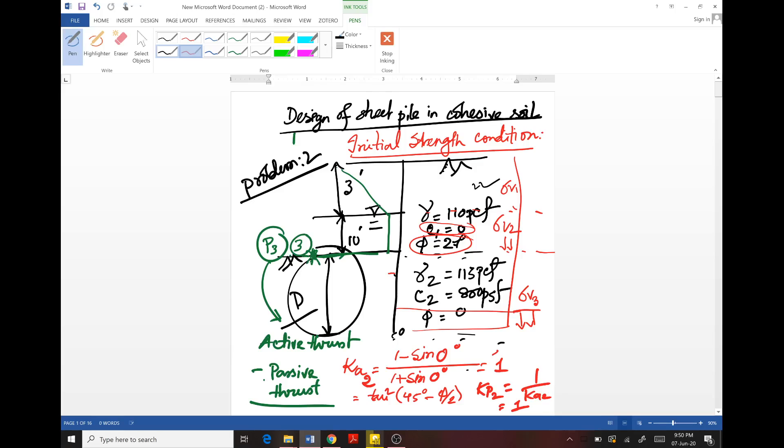After time passes, drainage will occur, cohesion will disappear, and in final strength condition, for critical design purpose, cohesion will be taken as zero and internal angle of friction phi will be taken less than 30 degrees.